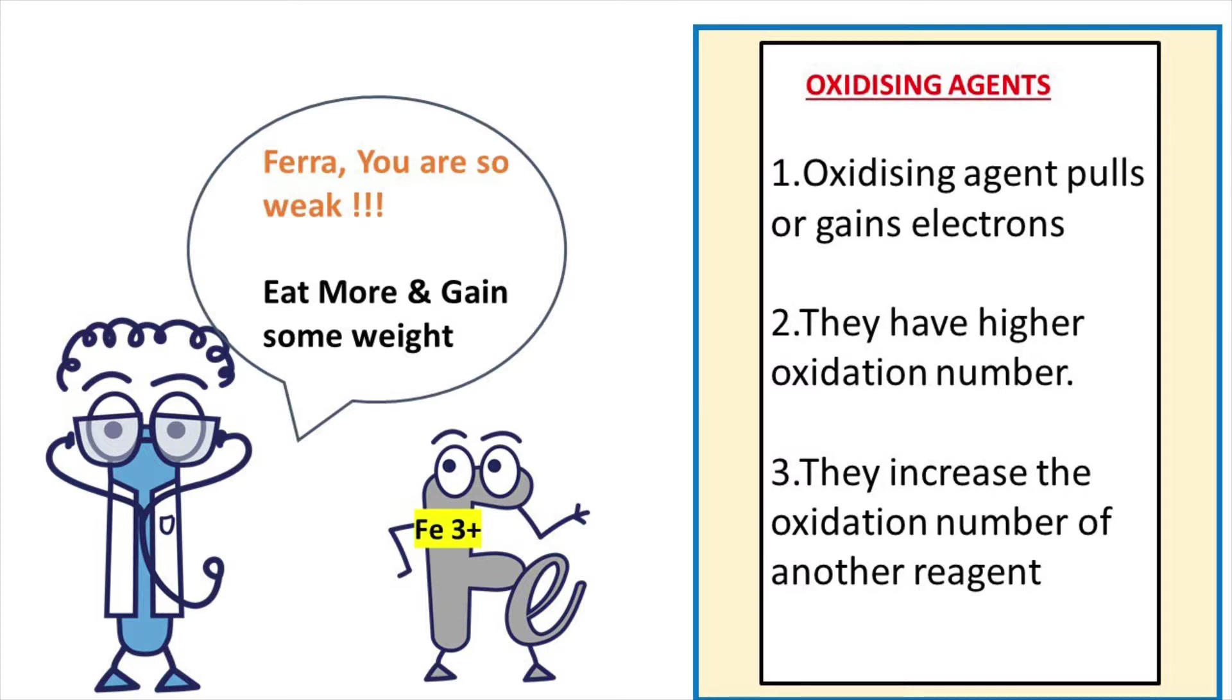To know whether the reaction is feasible or not, we should know two things: one is identification of the oxidizing agent, and the second one is, after identification, we need to compare their electrode potential with each other.